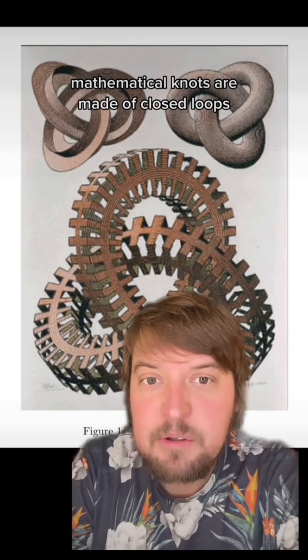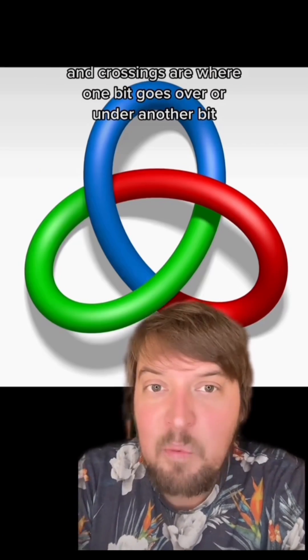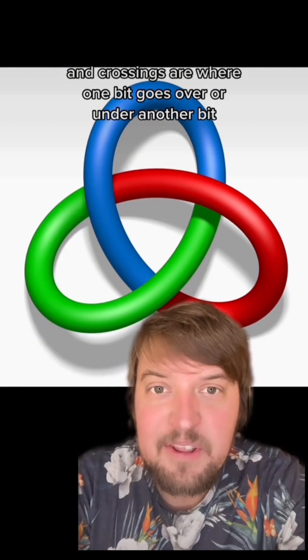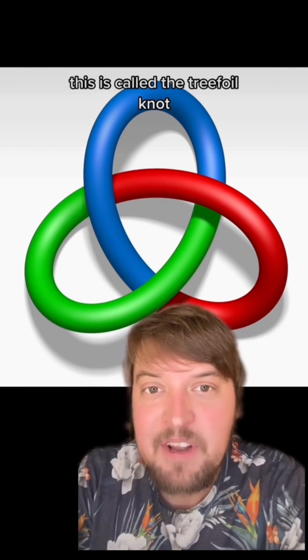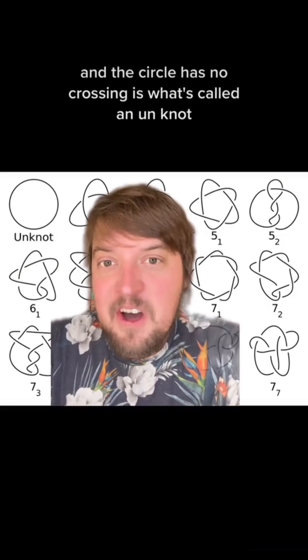Mathematical knots are made of closed loops and are categorized by what's called crossings. Crossings are where one bit goes over or under another bit. This is called the trefoil knot and it's the only knot with three crossings. A circle has no crossing and is what's called an unknot.